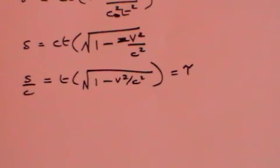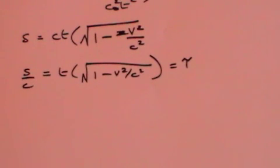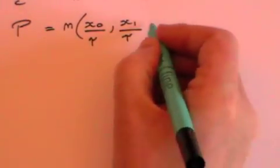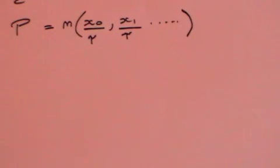Tau is an invariant quantity which everyone in the universe can calculate. We spoke of x as being a four-vector. We're now going to create another vector, which I'm going to call the four-momentum vector — capital P. I'm going to define it as m times x0 divided by tau, x1 divided by tau, x2 divided by tau, and x3 divided by tau. To keep things simple, we're just going to work in the time dimension and one space dimension.